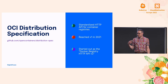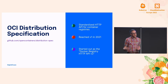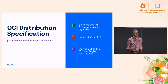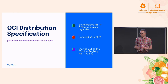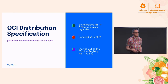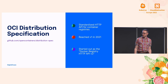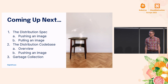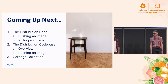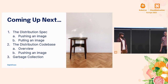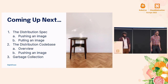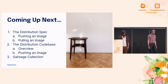The OCI Distribution Spec is vendor neutral. It was originally written by Docker to go with their registry implementation, but it's been adopted and updated by the Open Container Initiative, which is a community. There are lots of different implementations on both the client and the server side. Now let's dig into the distribution spec and the distribution code base.